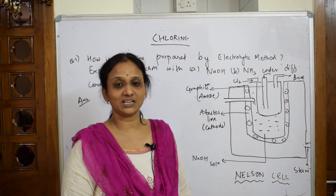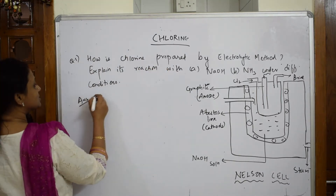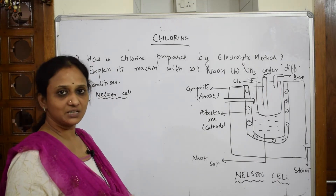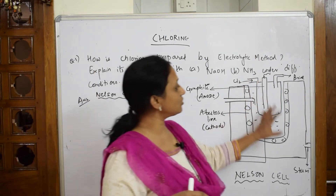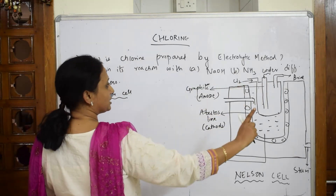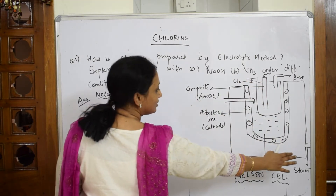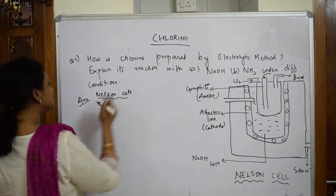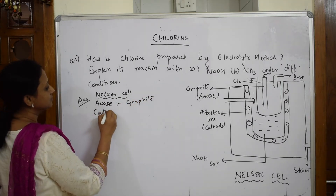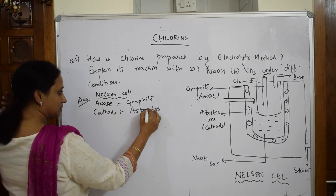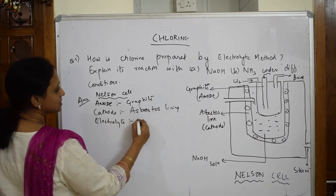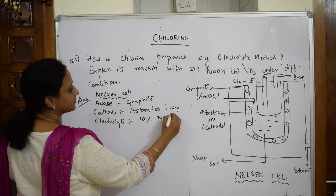The electrolyte used is brine solution, that is 10% sodium chloride. In the Nelson cell: point one — U-shaped porous container; point two — anode is graphite, cathode is perforated asbestos lining; point three — electrolyte is brine solution (10% NaCl). You should also include that there is a provision for steam to enter, because that steam is going to pick up electrons. Steam inlet is an important component.